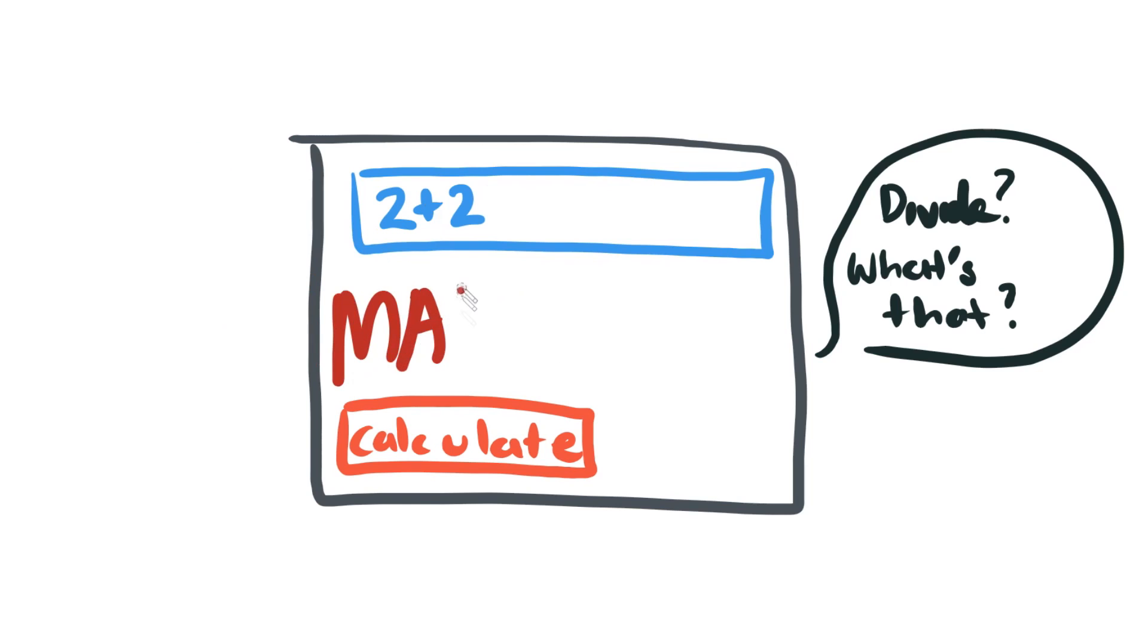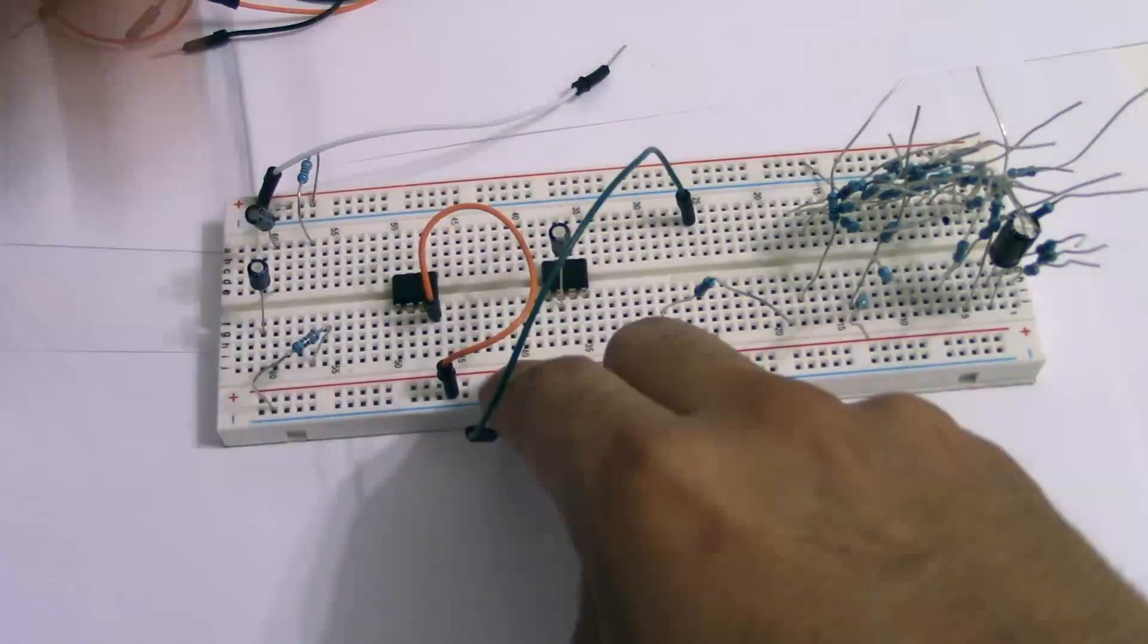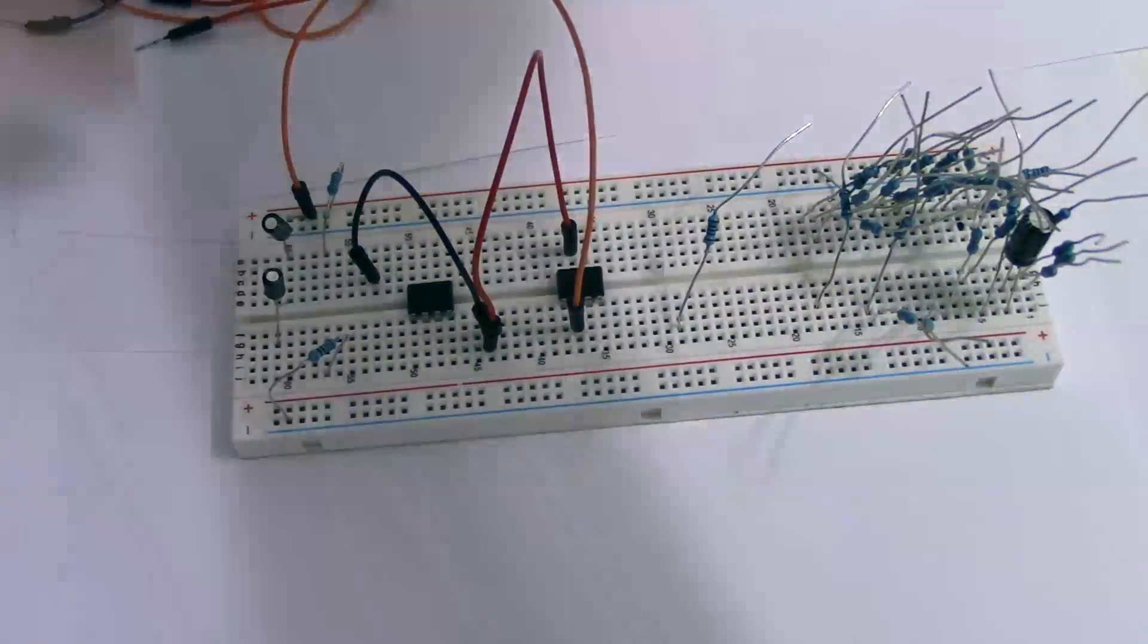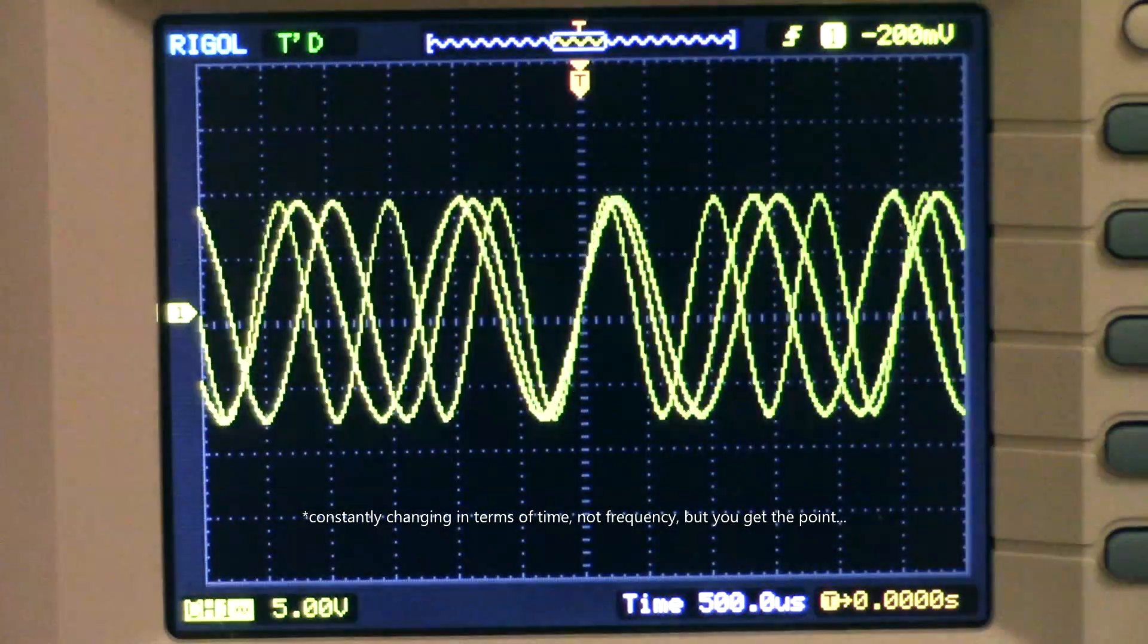Just like digital computing, analog computers have their disadvantages. For instance, they cannot be generalized to do unrelated tasks, meaning you will have to rearrange the entire circuit to perform a different task. Another disadvantage is that you cannot easily store analog information due to that constantly changing signal. Again, if you were to save an analog signal, the analog signal would then just be converted into a matrix of ones and zeros and stored that way instead.